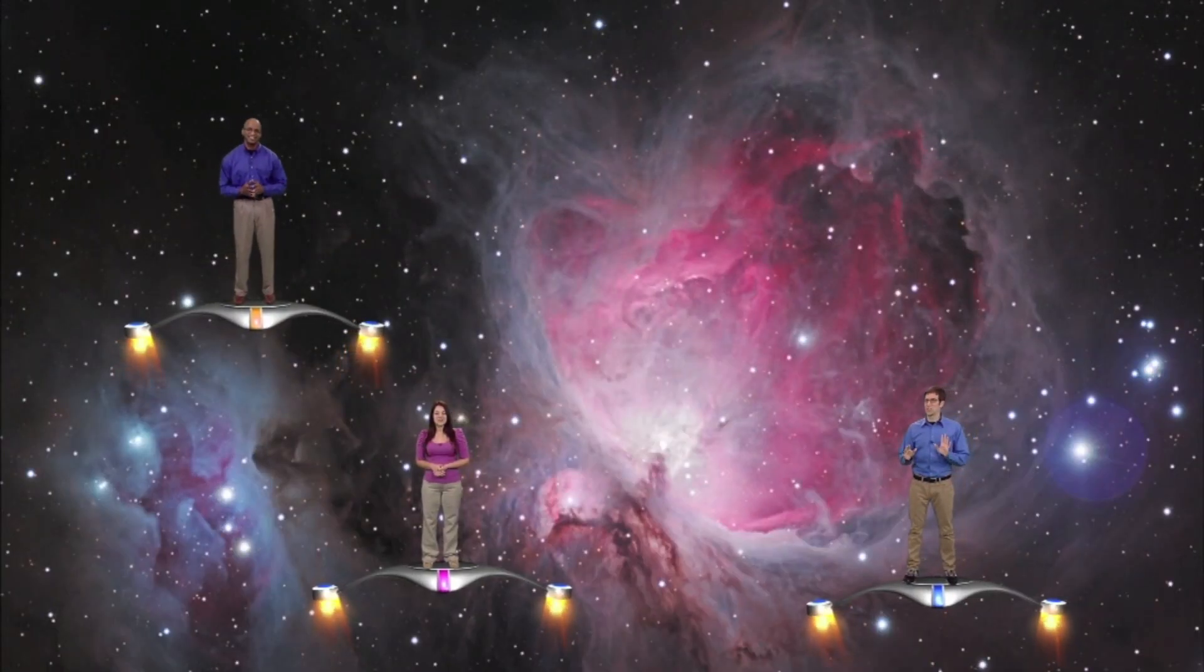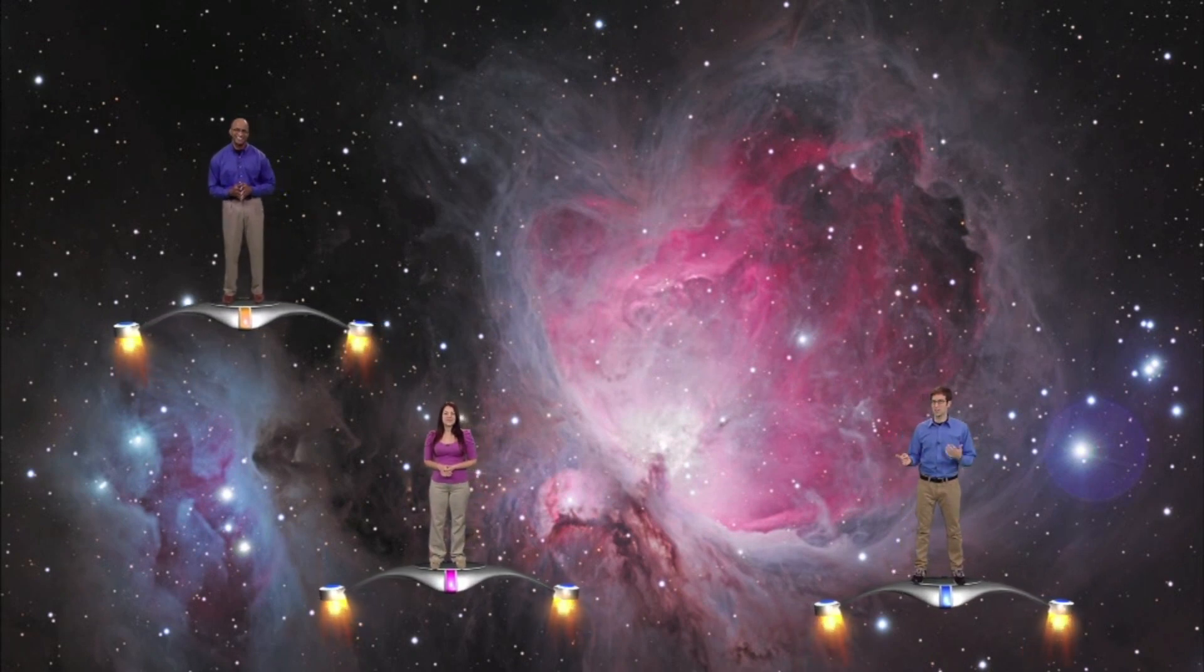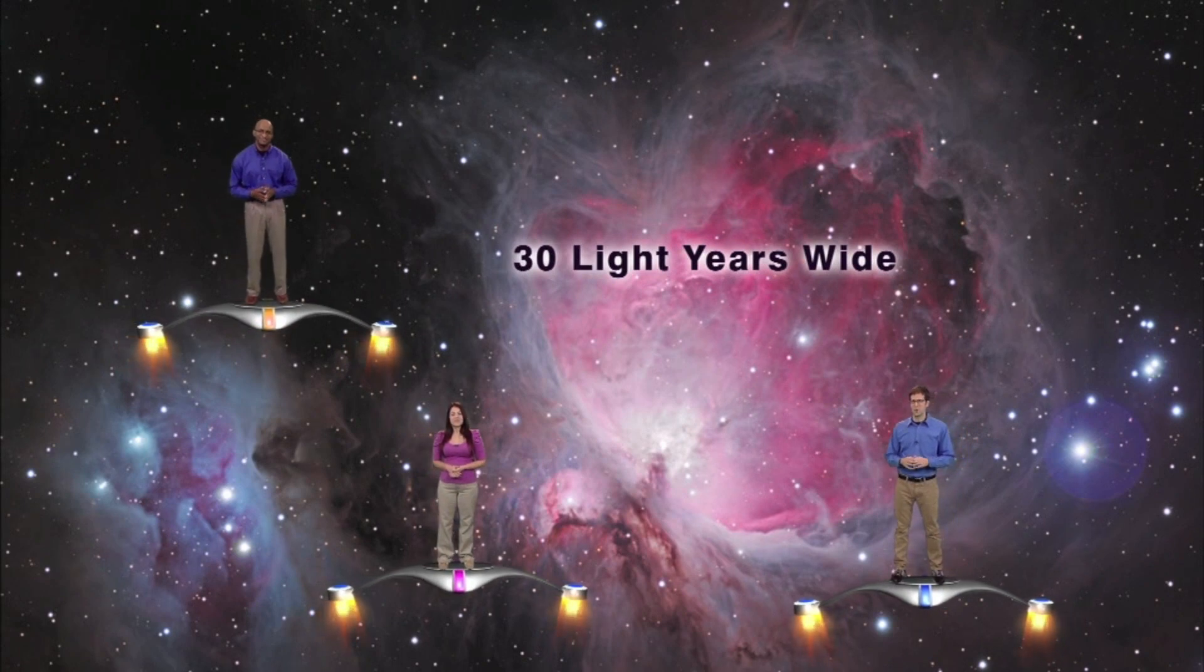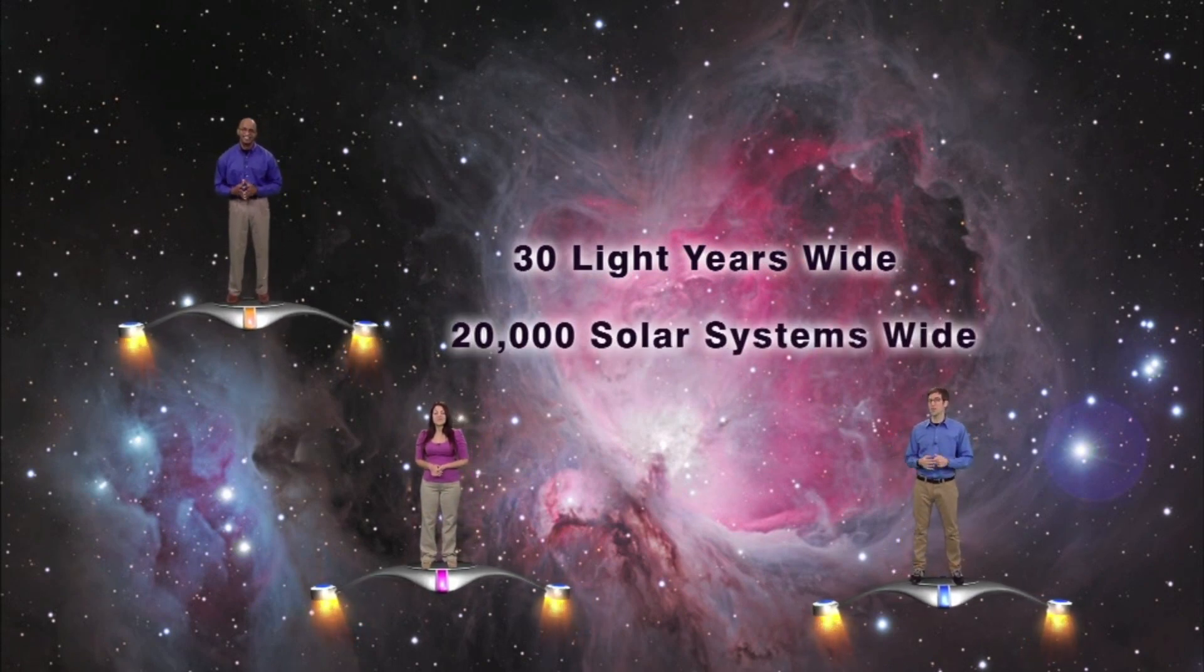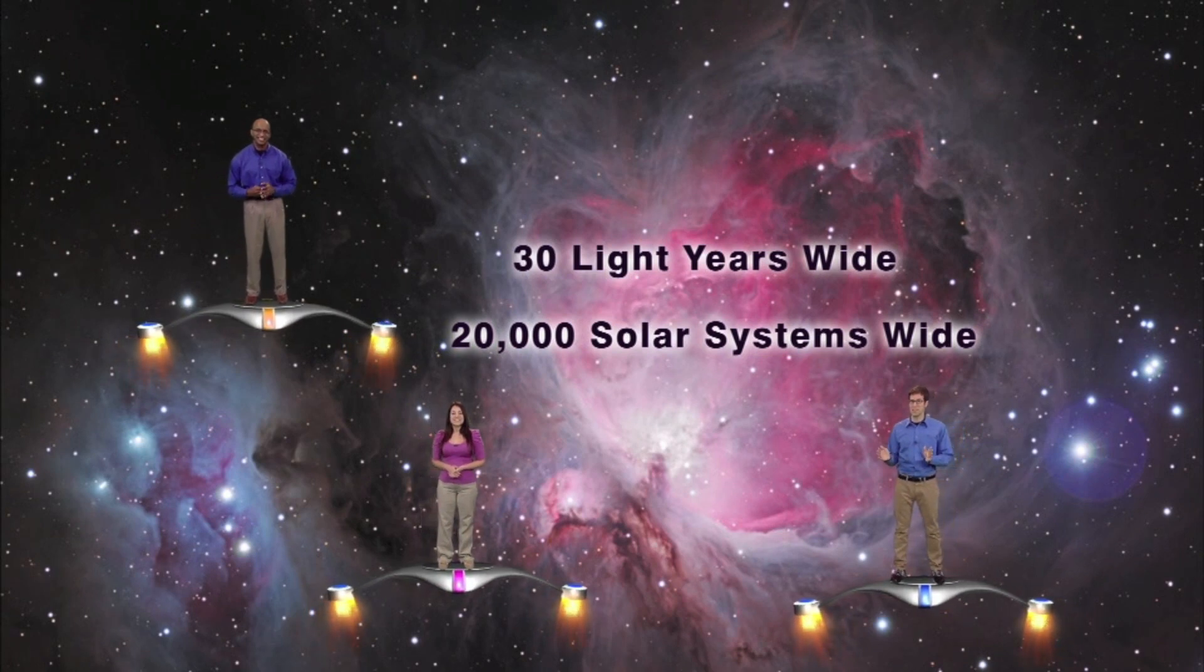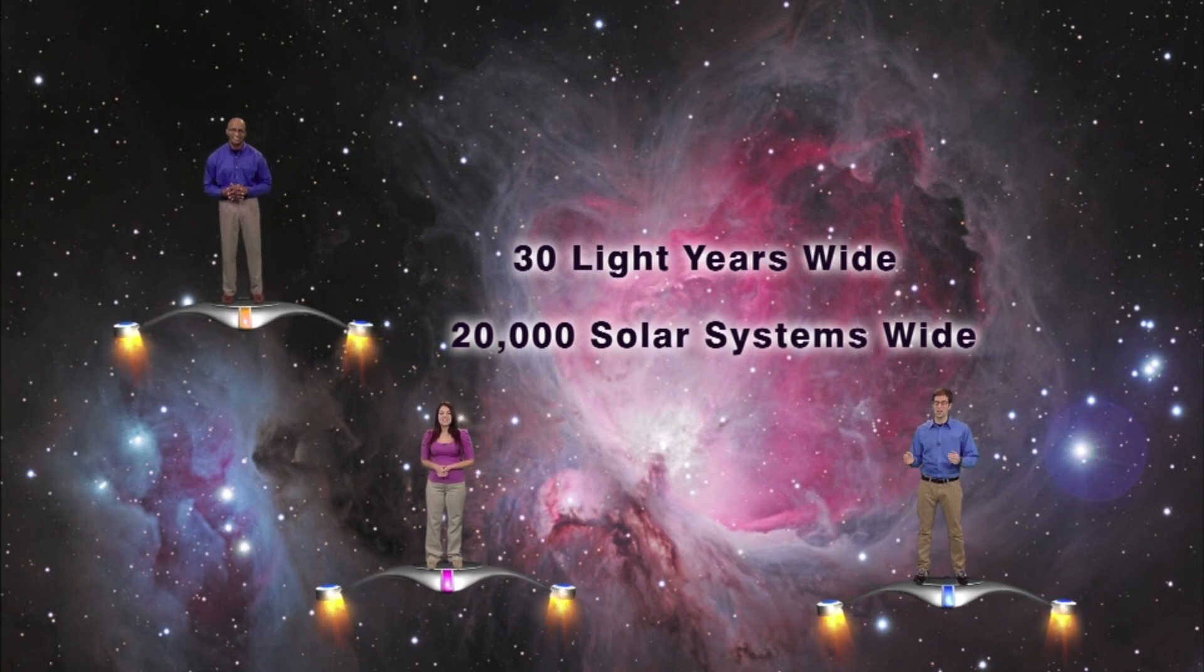But the Orion Nebula is so wide that if you were to travel at the speed of light from one side of the nebula to the other, it would take you almost 30 years to get there. When compared to the size of our solar system, it would take 20,000 of our solar systems lined up end to end to reach from one edge of the nebula to the other.